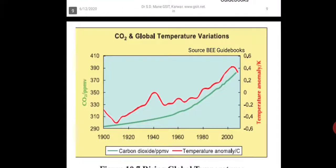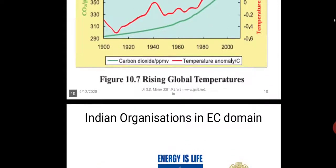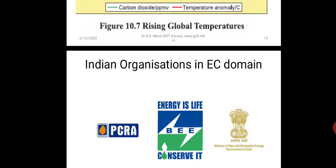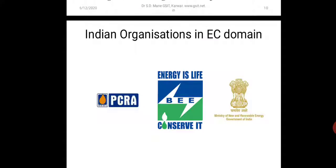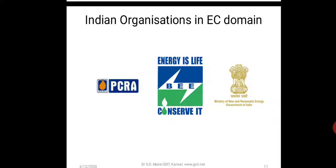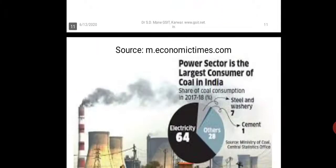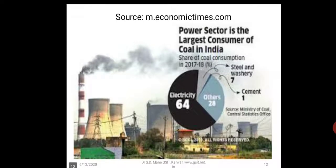The CO2 levels, which were earlier around 290–300 ppm on average, are today hovering around 390 ppm — very dangerous levels of carbon dioxide in the atmosphere. This trend has to be reversed. Action is being taken at international and national levels. Organizations in India taking care of energy conservation include PCRA — the Petroleum Conservation Research Association — and BEE, the Bureau of Energy Efficiency, under the Ministry of Power.